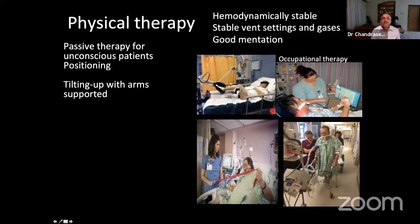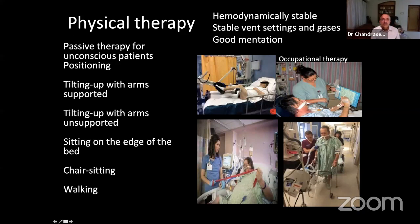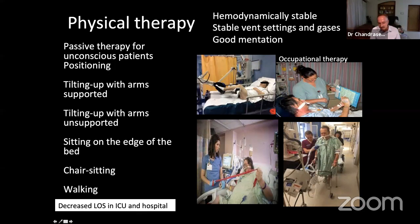Passive physical therapy requires hemodynamic, gas, and neurological stability. Steps progress from passive therapy for unconscious patients to positioning, tilting arms, supported and unsupported sitting on the edge of the bed, chair sitting, and walking. This decreases length of stay and hospitalization. Respiratory therapists and physiotherapists should be impressed upon that this is what matters for later weaning success.